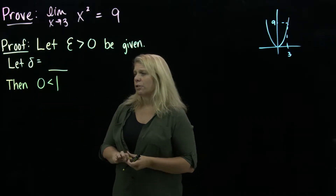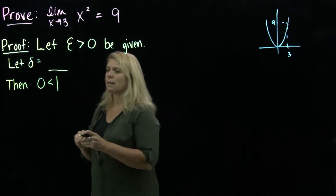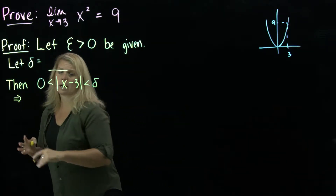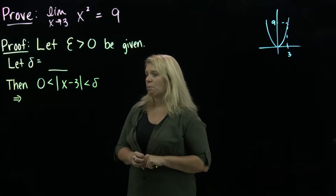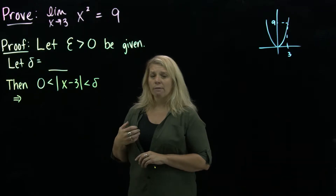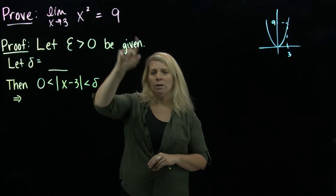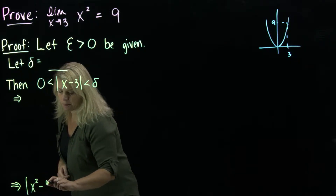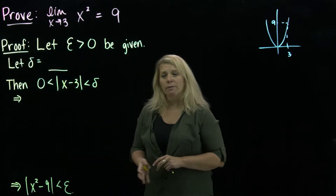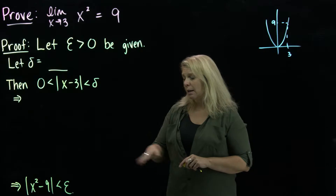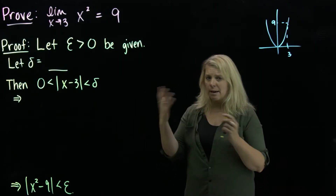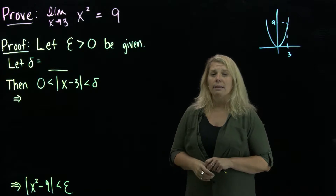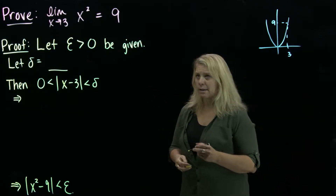This is straight from the definition. The next few lines are implications that lead us, hopefully, to what we want at the end: an absolute value expression — the absolute value of f(x) minus L, less than epsilon. That's at the end of your proof. Once you've completed the proof, we want to go back and fill in what needs to go in the delta blank. We often write a little sentence at the end saying therefore we've shown what we claimed to show.